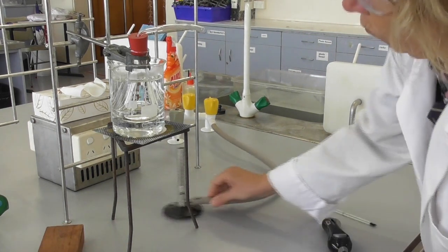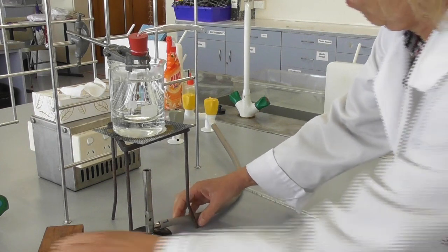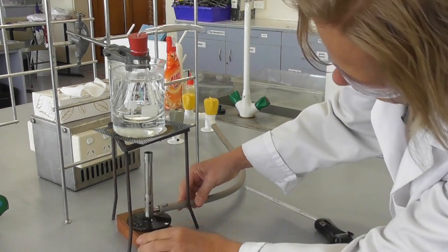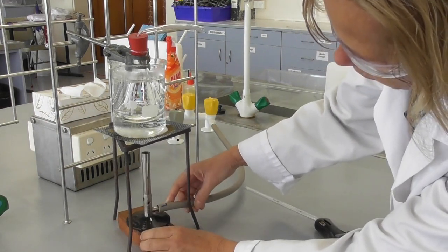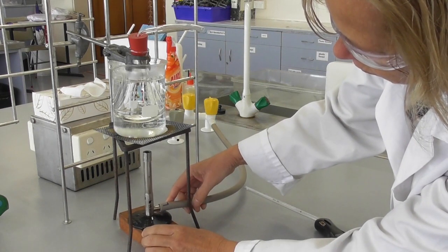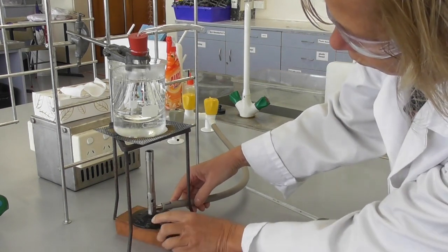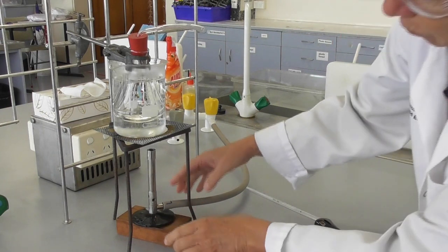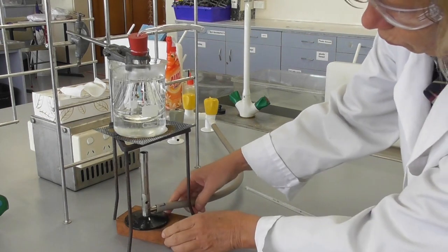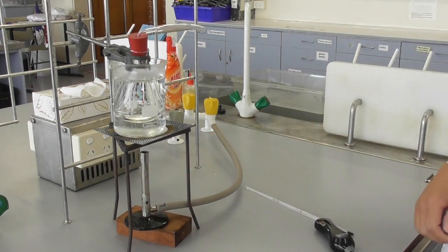We light a Bunsen burner, put the flame on hot and then raise it onto a wooden block to create more heat directly under the beaker. Then we wait for it to start boiling.